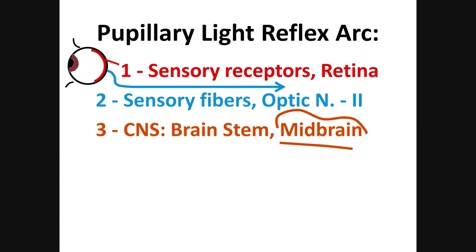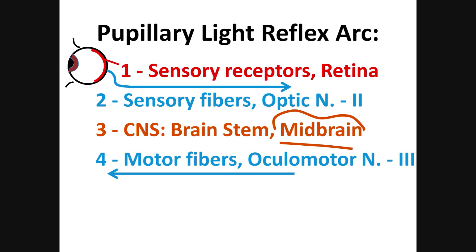The next part is the integration center in the central nervous system — specifically in the part of the brain called the midbrain. You'll see it very clearly during the brain dissection. The fourth part is the motor fibers to the muscle in the iris that constricts the pupil.